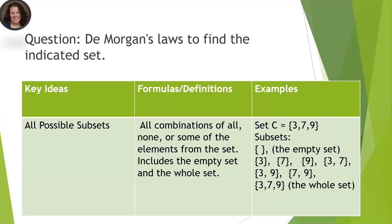So when we say all possible subsets, we're looking for all combinations from the set. So in this example, I have set C with the numbers 3, 7, and 9.